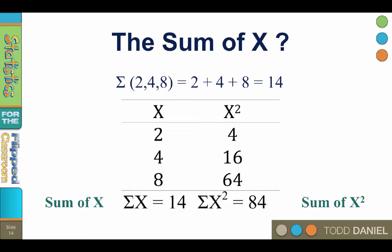Then, add up the x squared values. We can now say that the sum of x squared is 84.